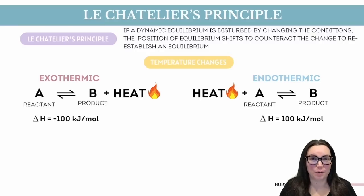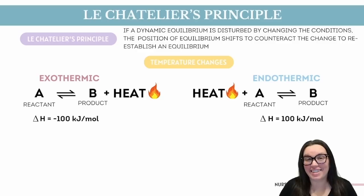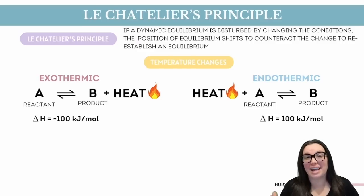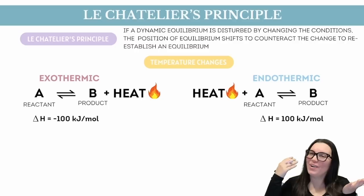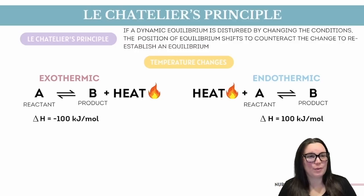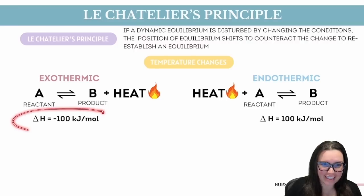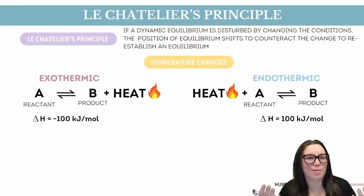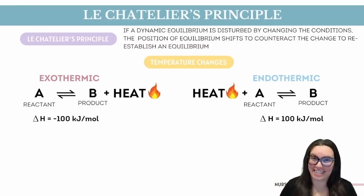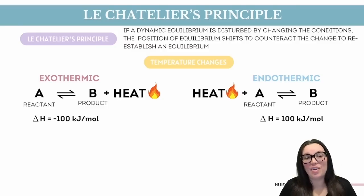Another way that we can stress out an equilibrium is by changing the temperature. To understand how temperature changes affect equilibrium, we first need to know if a reaction is exothermic or endothermic. This will tell us if a reaction releases or absorbs energy, represented by delta H, the change in enthalpy. If delta H is negative, the reaction is exothermic, meaning that it releases energy. In this case, we can think of heat as a product of the reaction.